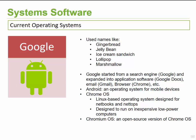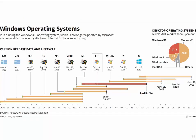The Windows operating system timeline shows that each version lasts for a certain period. Support has ended for Windows Vista and Windows XP, meaning Microsoft will no longer assist with issues on those versions, and users are expected to upgrade to Windows 7, Windows 8, or Windows 10.